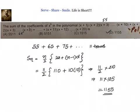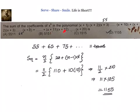Let us have a recap of this problem. What we have been asked? We have been asked to find out the sum of coefficients of x power 9 in the given polynomial. This polynomial has 11 terms. The first term is the product of x plus 1 up to x plus 10. The second term is the product of x plus 2 up to x plus 11, like that. The last term is the product of x plus 11 up to x plus 20. What we have done is we have taken the first term and tried to identify what will be the coefficient of x power 9. Since we have 10 terms here, from x plus 1 up to x plus 10...